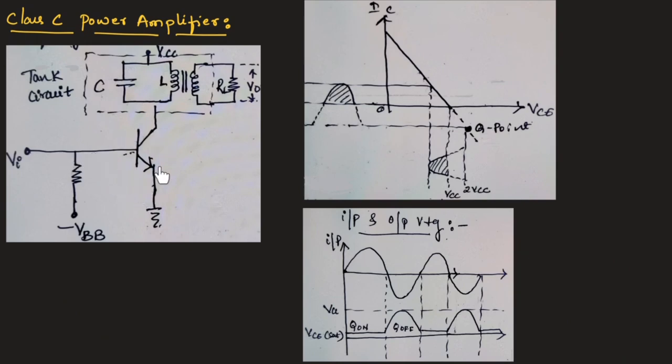Here, the transistor will conduct only when the input voltage or the input signal exceeds the cut-in voltage of the base emitter junction.